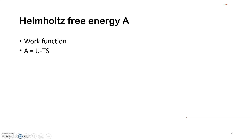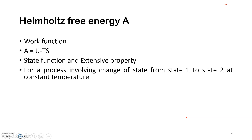The first free energy function introduced was Helmholtz free energy A, also known as the work function. Helmholtz free energy A is defined as A = U − TS, where U is the internal energy, T is the temperature, and S is the entropy. It is a state function and an extensive property. Since A is a state function, a change in A during a process at constant temperature can be written as delta A = delta U − T delta S.